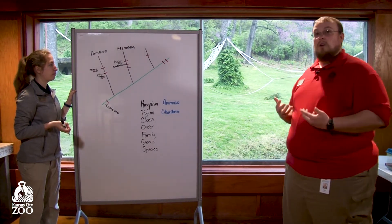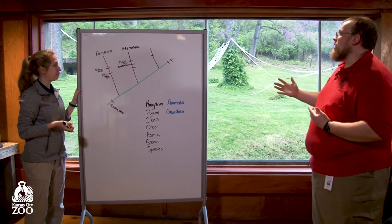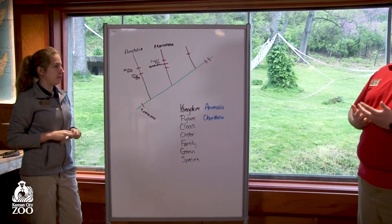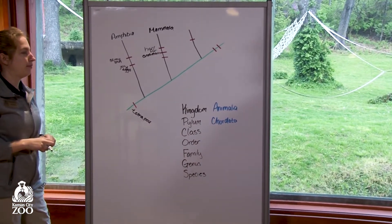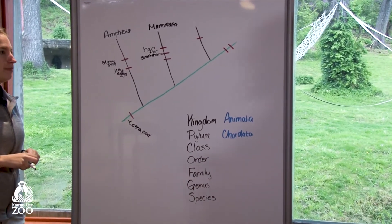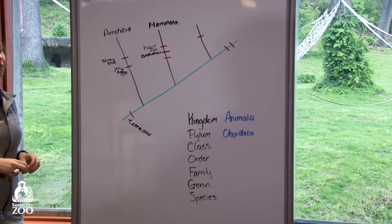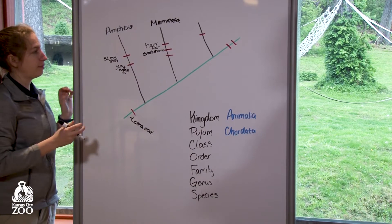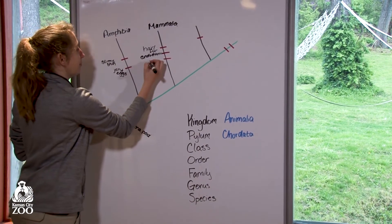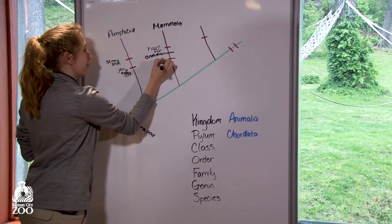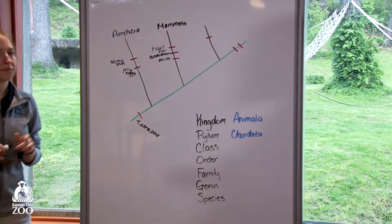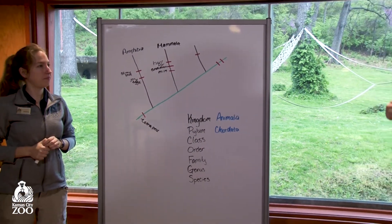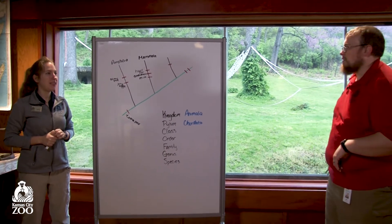Ectotherms, also known as cold-blooded, rely on the temperature changing around them. They can't regulate themselves — they have to find some kind of outside source, like the sun or a hot rock. That's why sometimes in the summertime you see reptiles or snakes out on the asphalt sitting in the sun. The last big thing about mammals is when they have babies, we feed our babies milk. Those are the three big characteristics of mammals, though there are many smaller ones too.